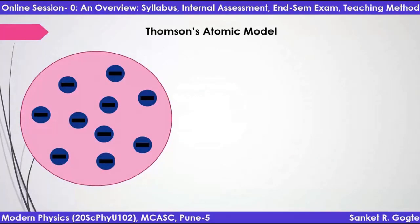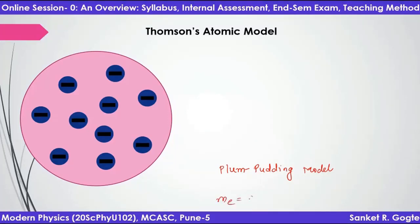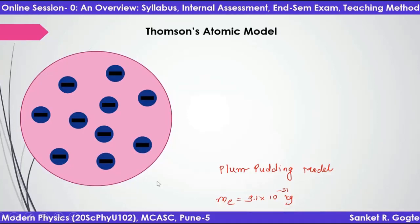Thomson's atomic model was quite simple. It is sometimes called the plum pudding model. Thomson proposed this very simple model: there are electrons which are embedded in the atom. The mass of the electron was already known — it is roughly 9.1 × 10⁻³¹ kg — and this mass was already predicted to good accuracy by Thomson. It was also known that these electrons carry negative charge, and it was also evident that atoms should be much, much heavier compared to electrons.